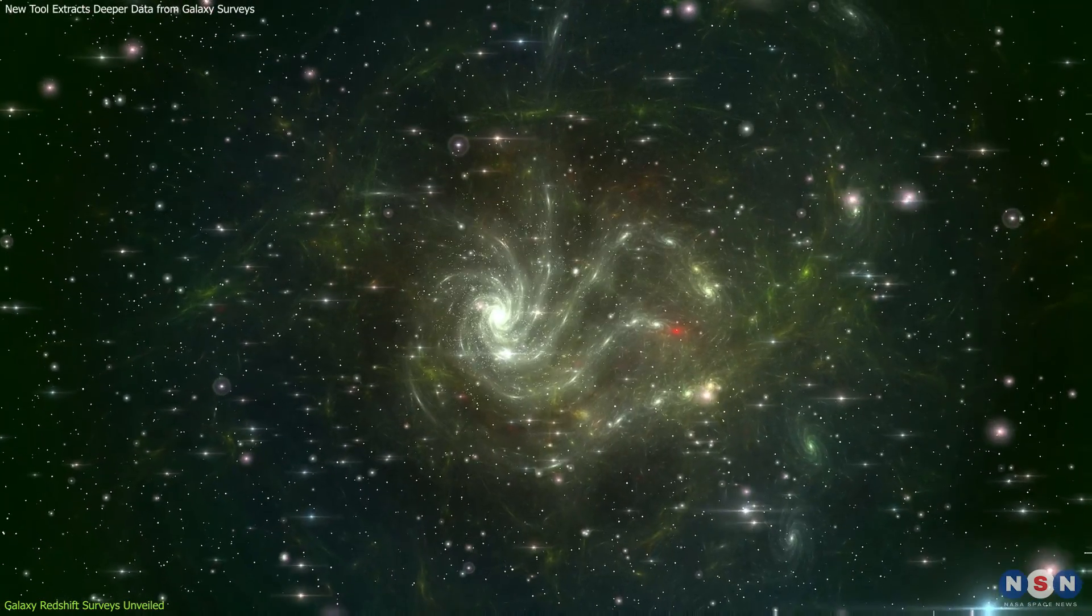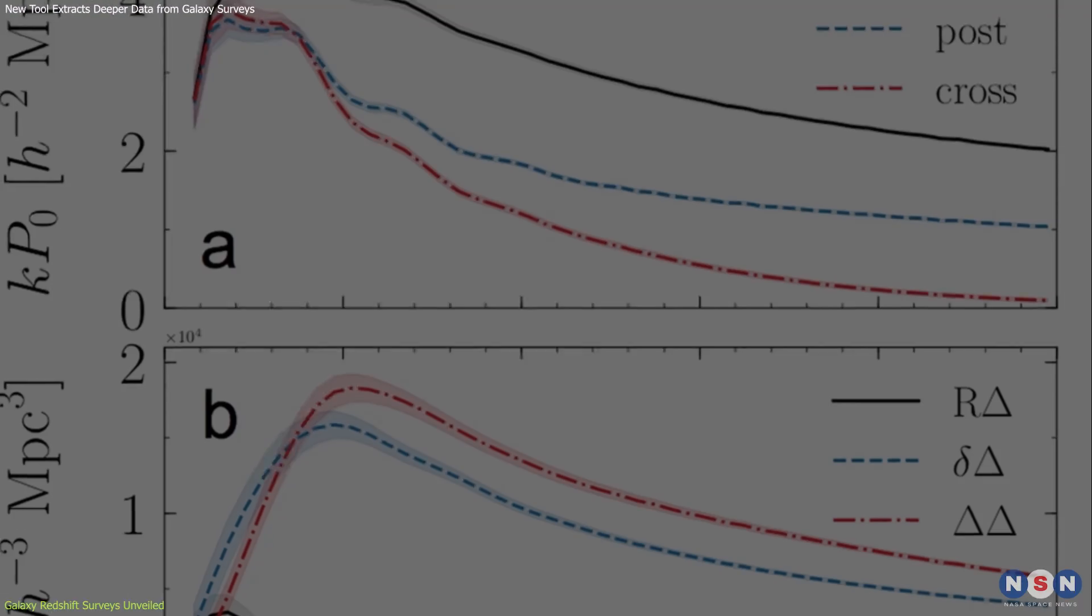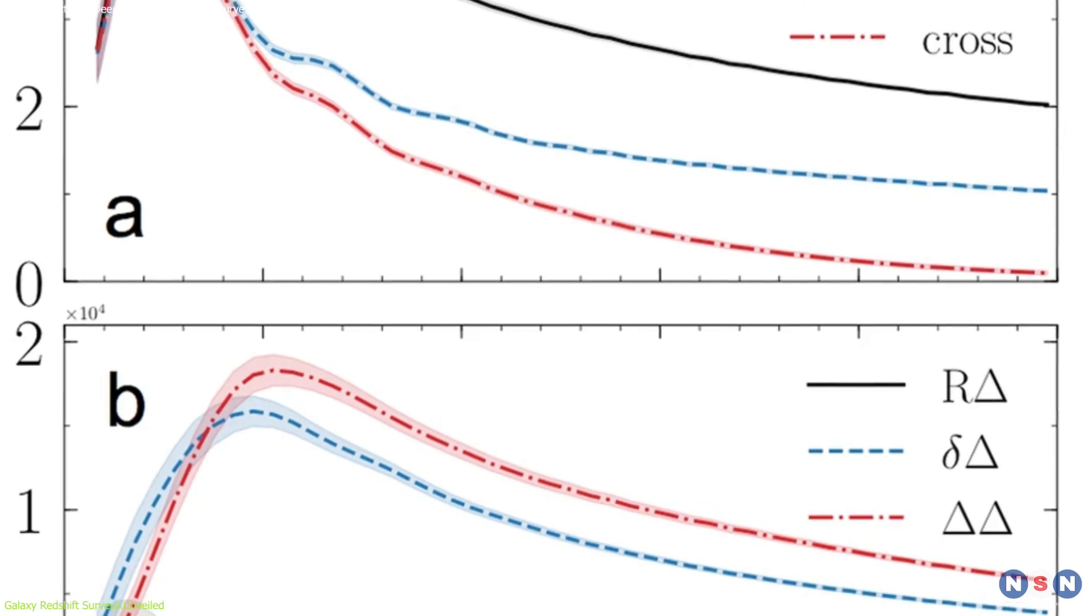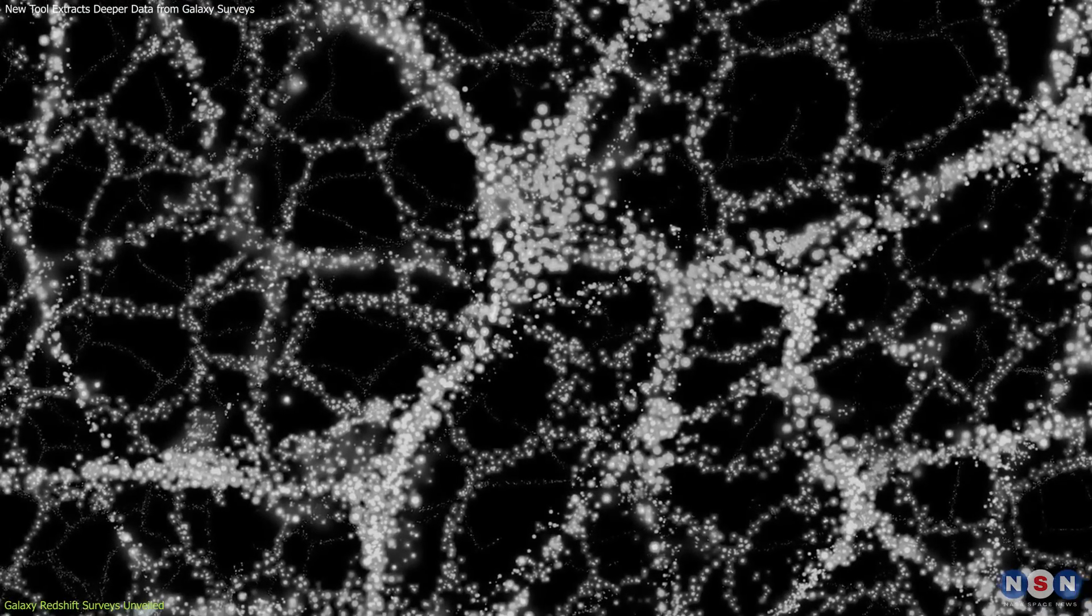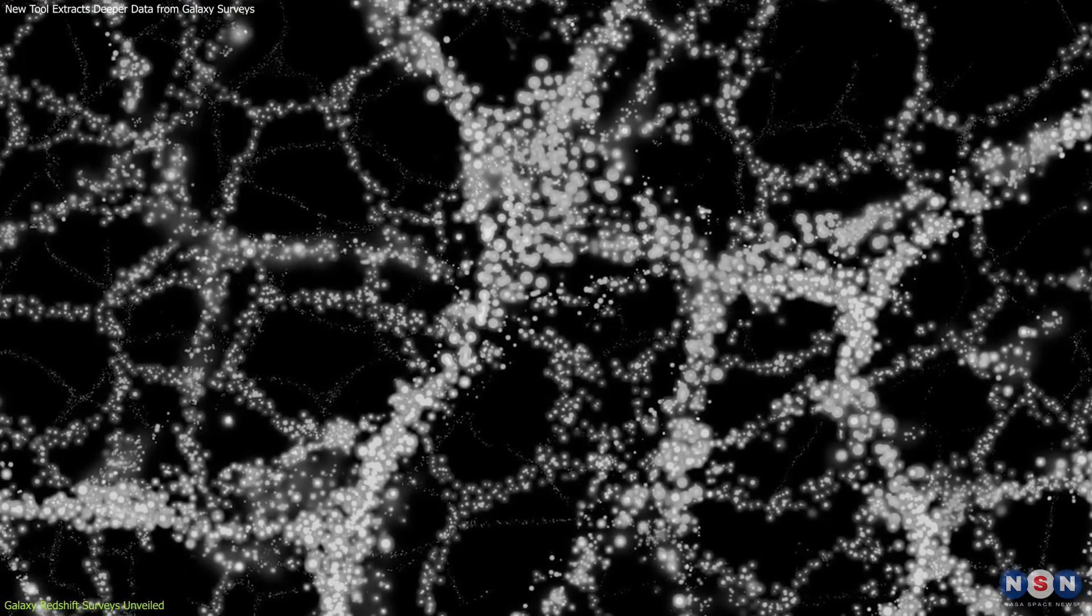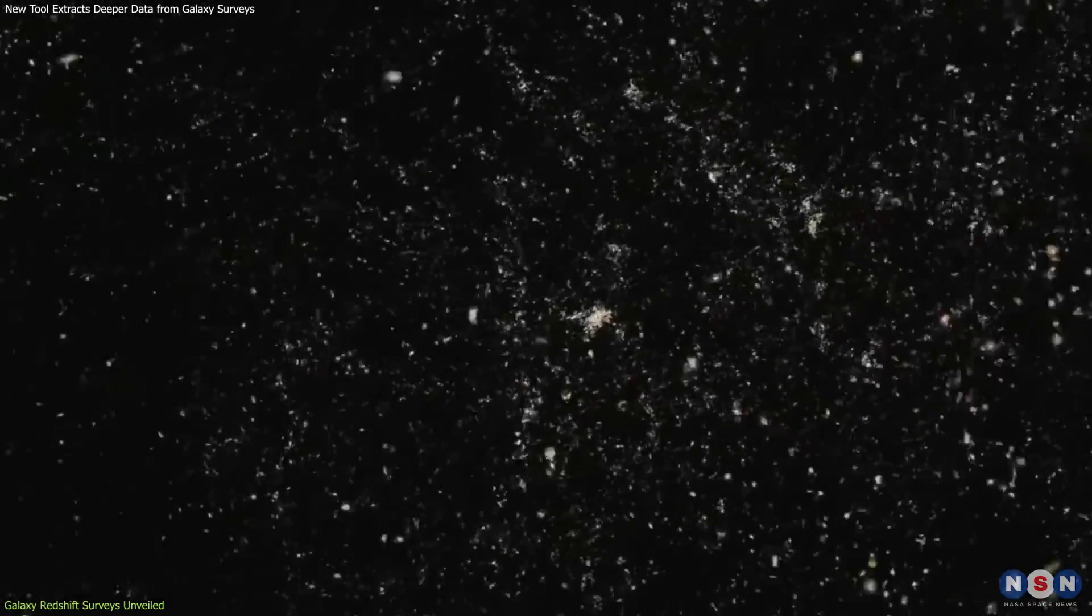By comparing these predictions with actual observations from redshift surveys, astronomers can validate or challenge the prevailing understanding of dark matter and dark energy.